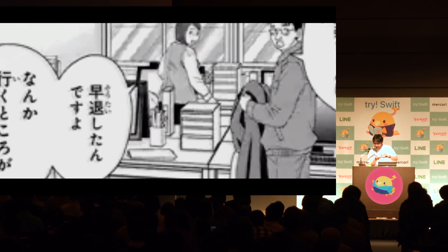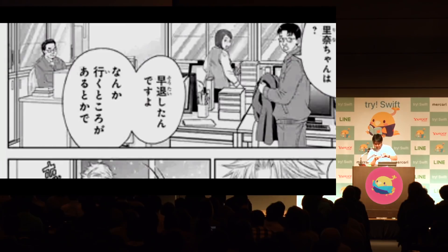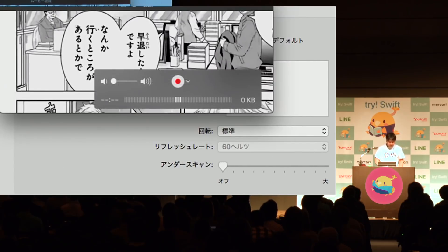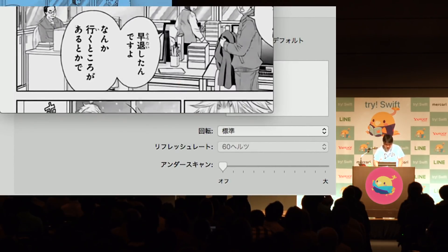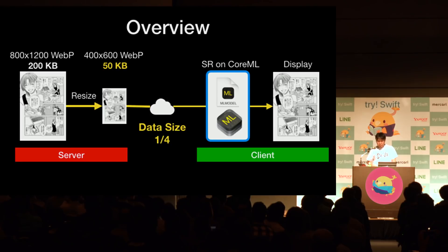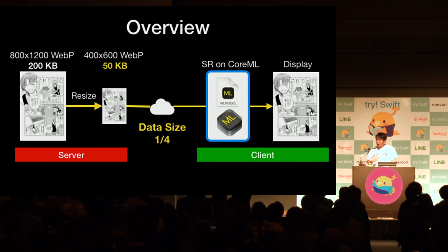Thank you — that's a very jagged image, but now very smoothly. This is an overview of the demo: the server sends a very small size image to the client, and the client receives the small image and converts it to high resolution using SR on Core ML.